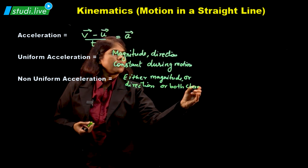Now let us learn about acceleration in detail and write the formula. Acceleration is nothing but change in velocity — the formula is v vector minus u vector upon t. That is change in velocity upon time, and this is represented by a vector. Here v is the final velocity and u is the initial velocity.